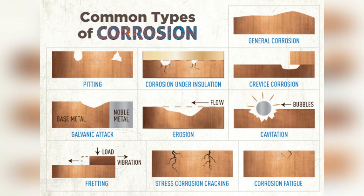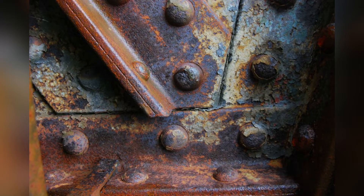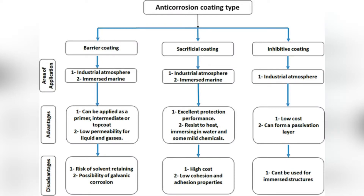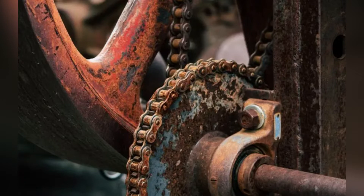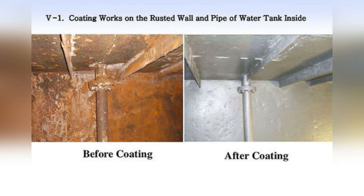Corrosion is the degradation of a material caused by chemical or electrochemical reaction with an environment. The material generally refers to metal, but can also include non-metallic materials such as ceramics, polymers, and plastics. Corrosion not only affects the strength and durability of the material but also proves to be expensive, leading to equipment damage and product leakages, especially crucial in chemical industries, thereby posing a threat to the environment.